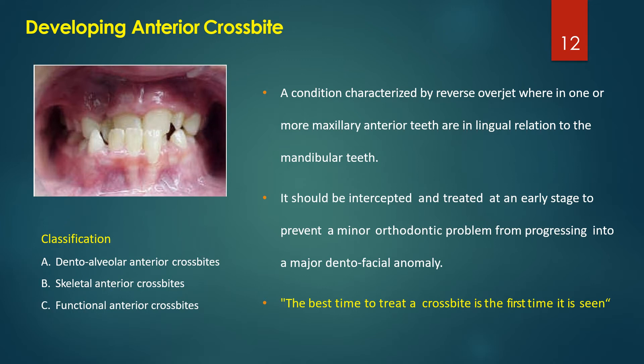The next condition to discuss is the developing anterior crossbite. This is characterized by reverse overjet, wherein one or more maxillary anterior teeth are in lingual relation to the mandibular teeth. It should be intercepted and treated at an early stage to prevent a minor orthodontic problem from progressing into a major dentofacial anomaly. It can be classified as dental-alveolar, skeletal, and functional anterior crossbites.